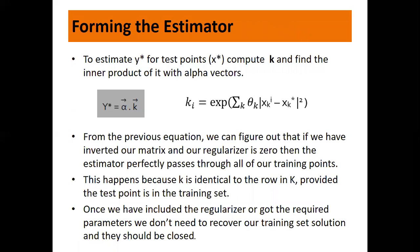Once the value of alpha is known, we can easily formulate the estimator. Using the coefficient found at the optimization step and the Gaussian kernel used, we can estimate y star for test point x star. Compute k and find the inner product of it with the alpha factors. From the previous equation, if we have inverted our matrix and our regularizer is 0, then the estimator perfectly passes through all training data points. Once we include the regularizer or get the required parameter, we don't need to recover our training set solution and they should be close.